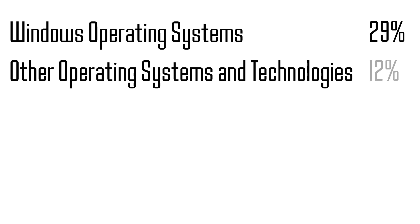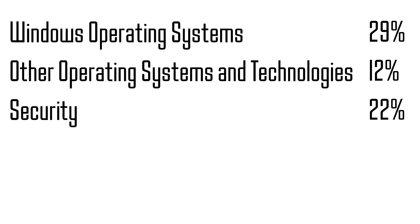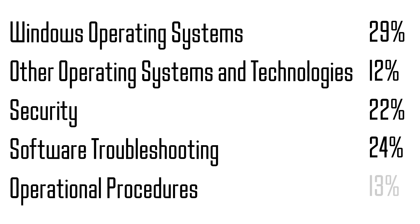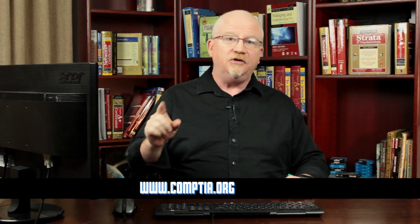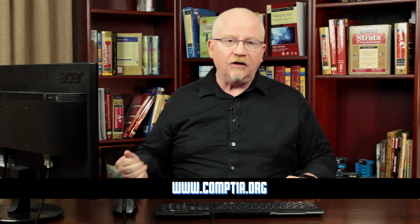There are five big objectives on the 220-902. First is Windows operating systems at 29% of the exam. Second is other operating systems and technologies at 12%. Third is security at 22%. Fourth is software troubleshooting at 24%. And fifth is operational procedures at 13%. I'm going to go onto the CompTIA website — www.comptia.org — and download the 220-902 objectives so we can look at those together.